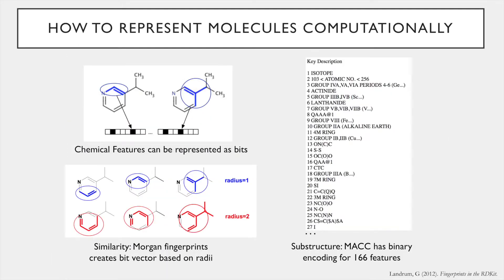The first step of my project was representing the drugs in the L1000 dataset computationally into fingerprints. The chemical features of any molecule can be represented as bits, as shown in the image on the top left. One way is using substructure — looking at the image on the right, there is a list of possible chemical features, and if that feature is present the bit will be represented accordingly. Another way is using similarity, which can be seen in the image on the bottom left. In this method, paths in the molecule are determined and these are then represented as bits.